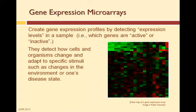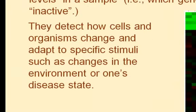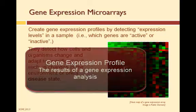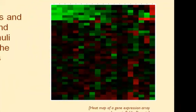These arrays can also be used to compare the genes of cells affected by a disease versus those not affected by the disease. Gene expression microarrays detect how cells and organisms change and adapt to specific stimuli — how they change based on changes in the environment or one's disease state. This accumulation of information, or the results of a gene expression test, is called a gene expression profile. This graph is a heat map of a gene expression array, and the different colors help identify the presence or absence of genes, as well as the level of activity of genes.